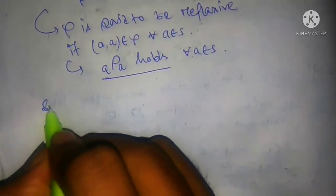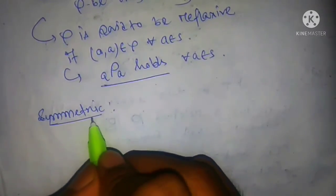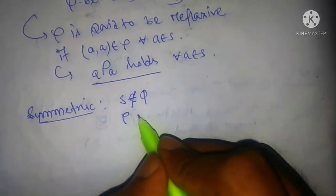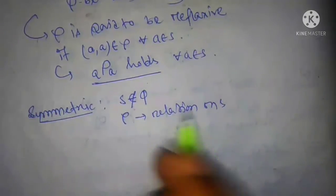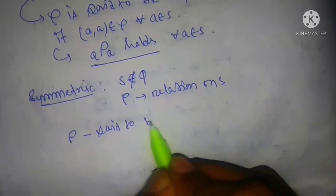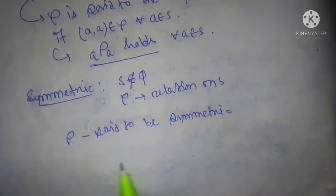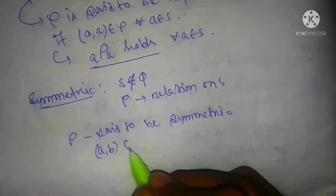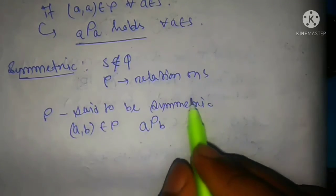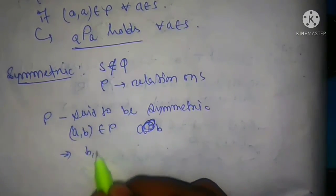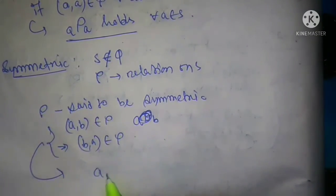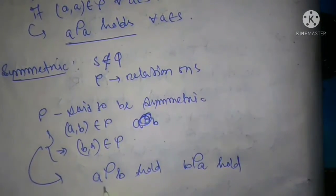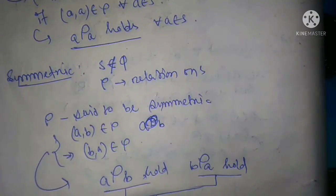Now, symmetric relation. Let S be non-empty and Rho be a binary relation on S. Then Rho is said to be symmetric if, whenever (a, b) belongs to Rho, it implies (b, a) also belongs to Rho. That is, if a is related to b holds, then b related to a also holds. If both hold, the relation is symmetric.